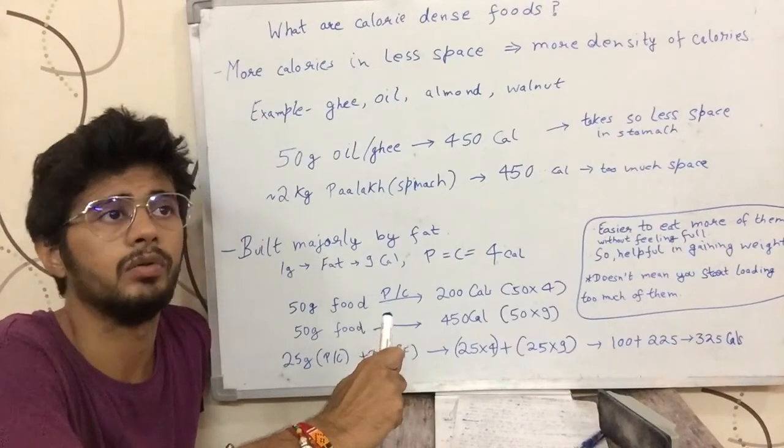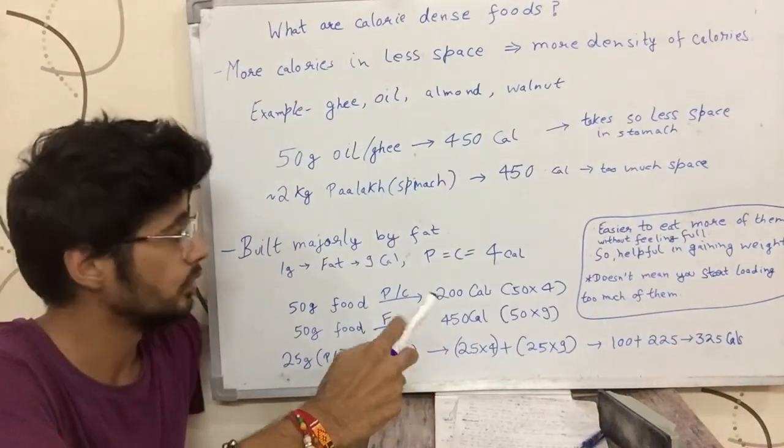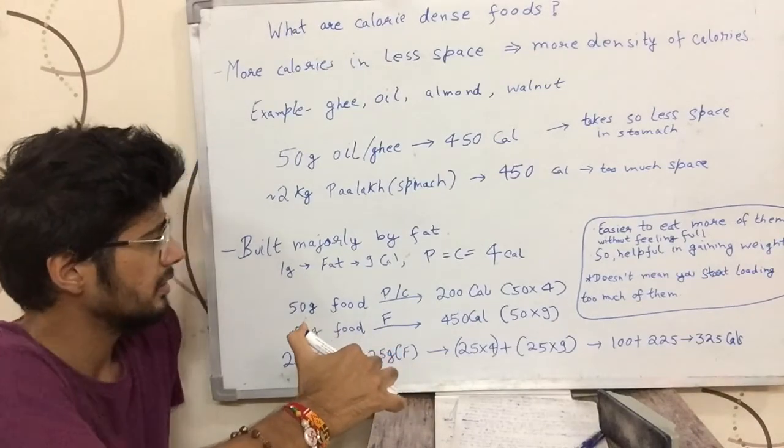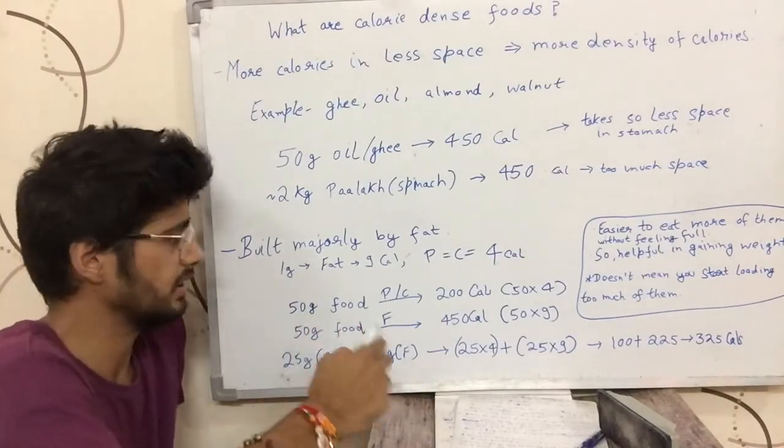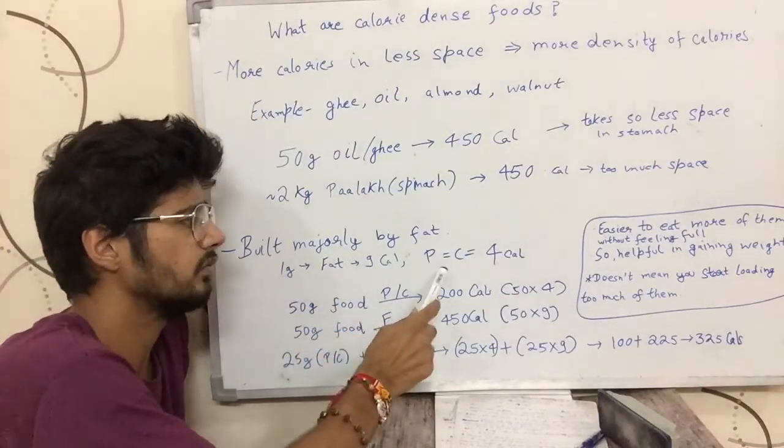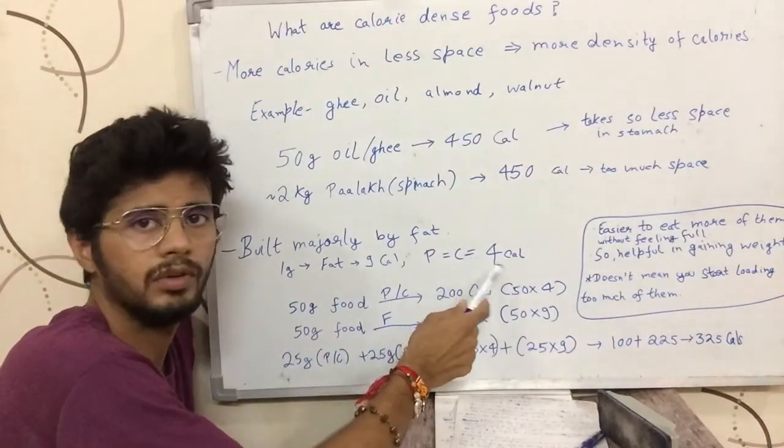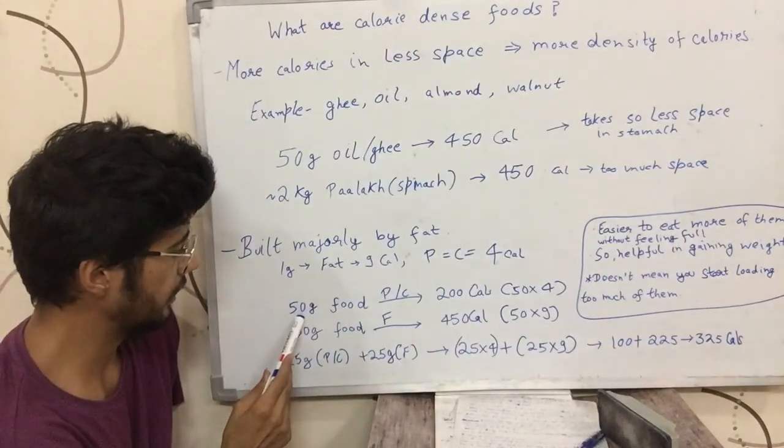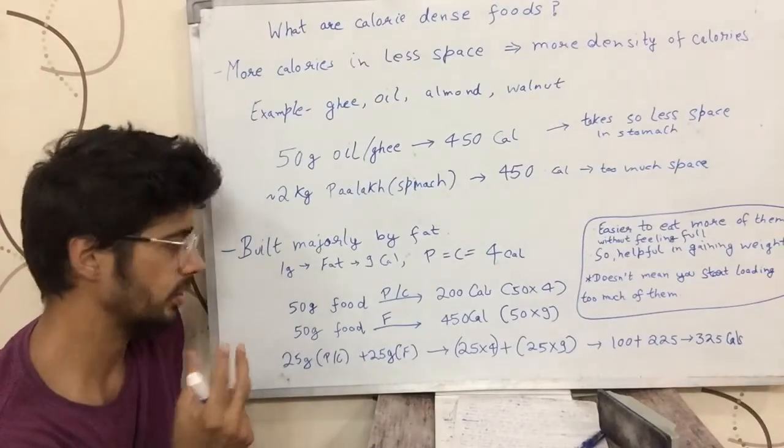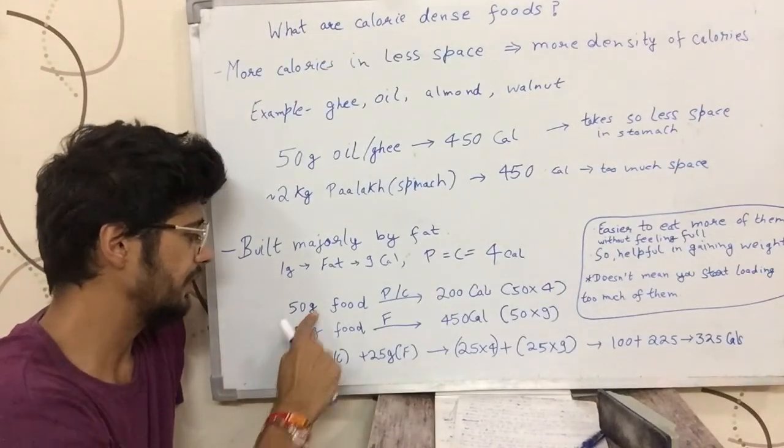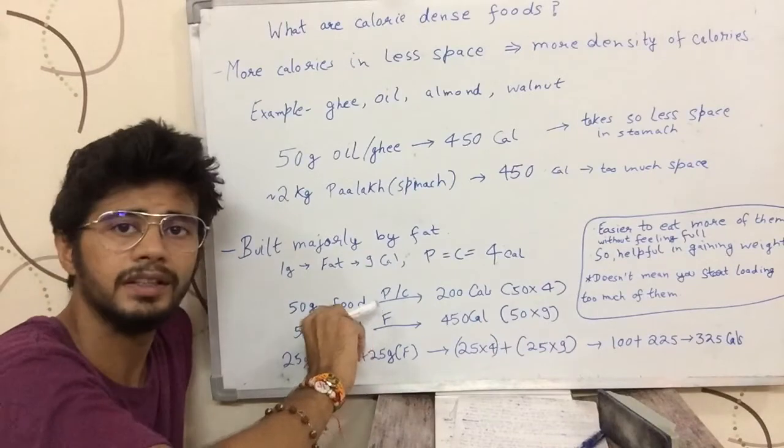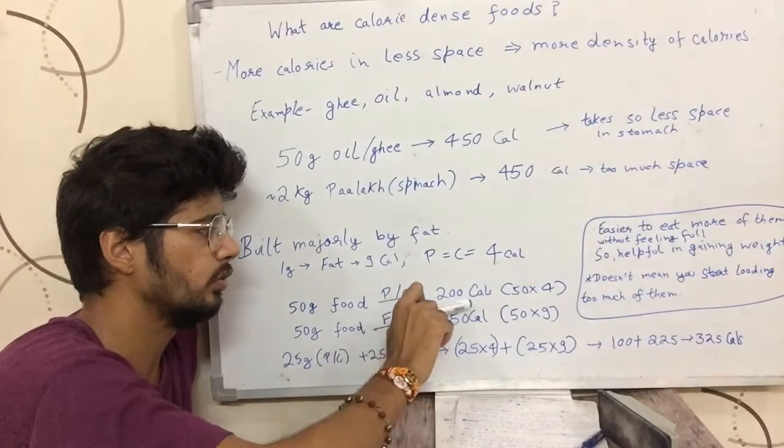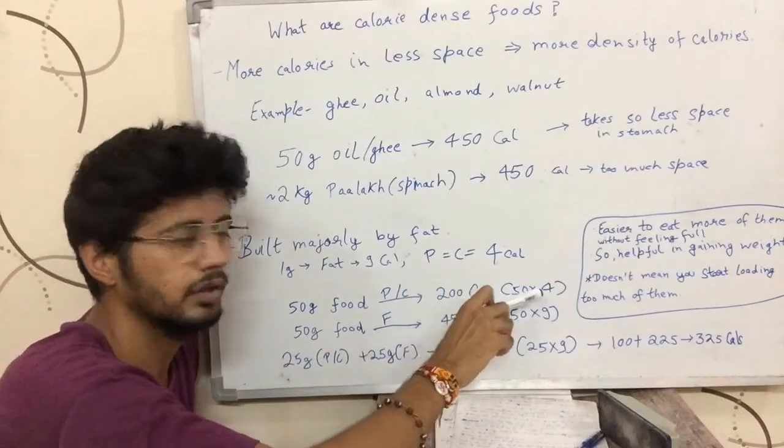Now you would ask me how would I know which foods are calorie-dense foods. Calorie-dense foods are built majorly by fat. I will explain that with an example. 1 gram of fat has 9 calories and 1 gram of protein or 1 gram of carbohydrate has 4 calories. We have talked about it earlier in the videos. Let's say there is a particular food and we take 50 grams of that food. If those 50 grams are from protein or carbohydrates, then the food would have 200 calories, 50 cross 4.